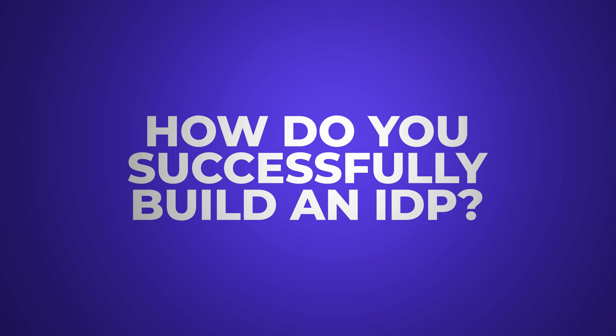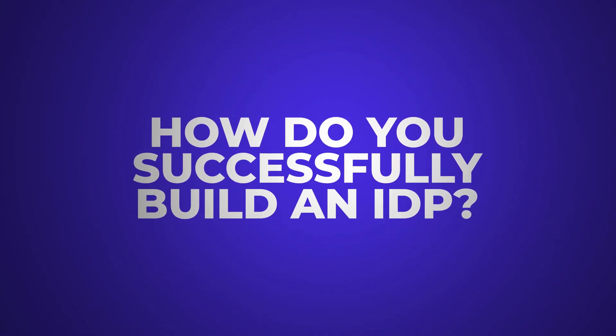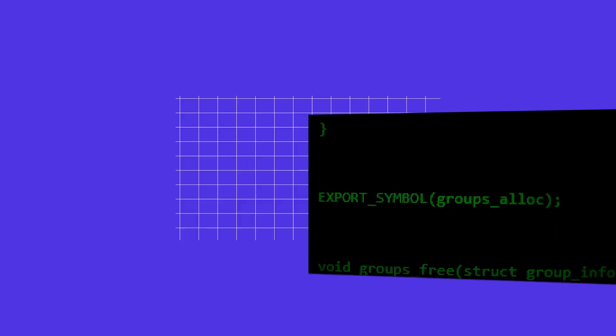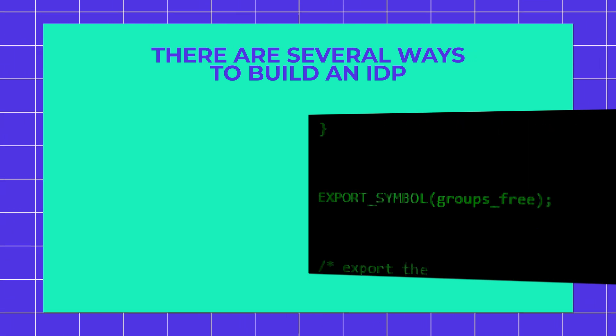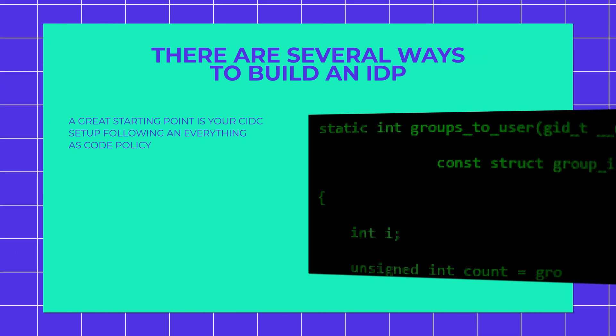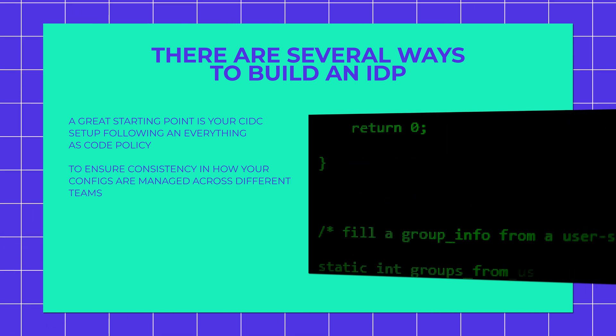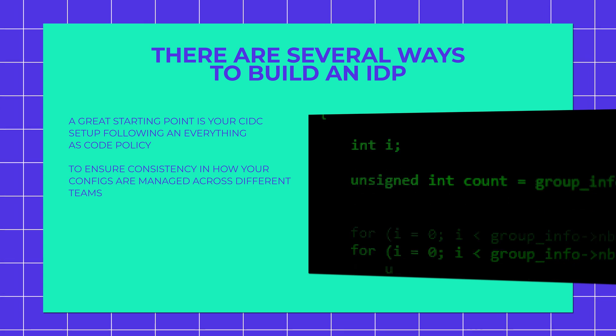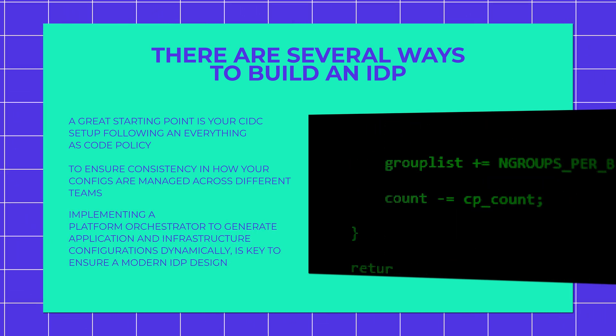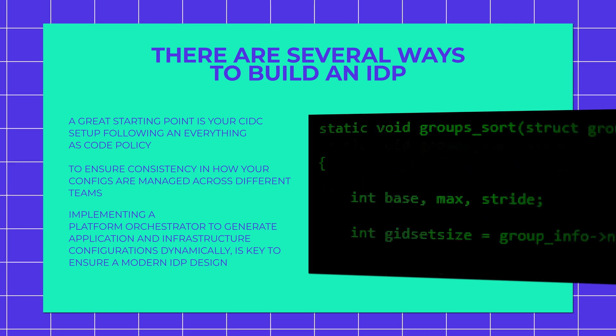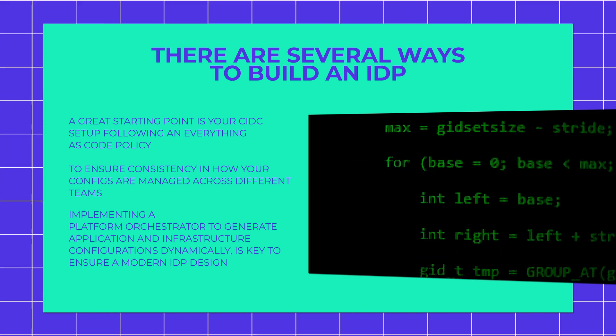So how do you successfully build an IDP? Well, like most things in life, it starts with listening. Listen to your developers, understand what the current bottlenecks in the delivery workflows are, and find the minimum common denominator issues to address first. When it comes to architecture, there are several ways to build an IDP. A great starting point is your CI/CD setup, following an everything-as-code policy to ensure consistency in how your configurations are managed across different teams. Implementing a platform orchestrator to generate application and infrastructure configurations dynamically is key to a modern IDP design.